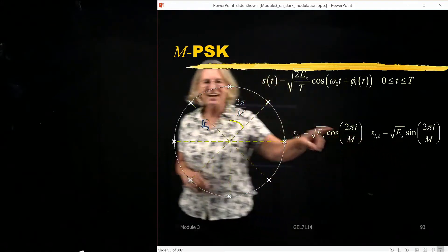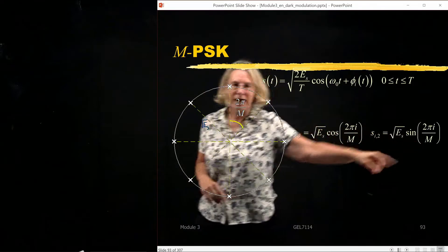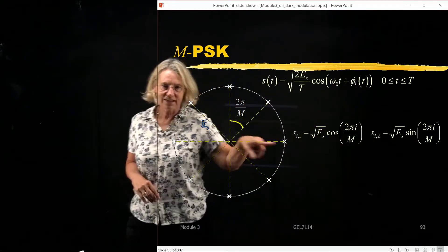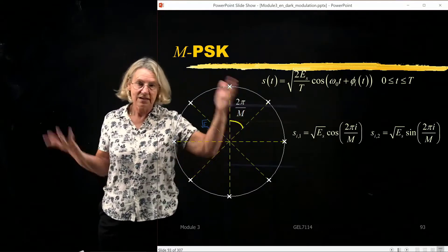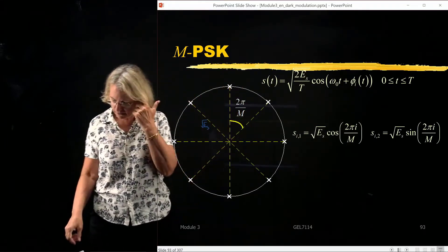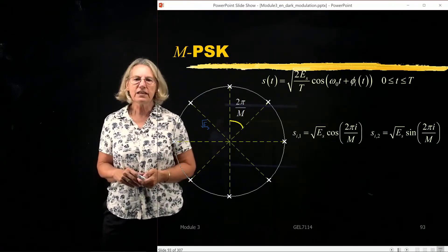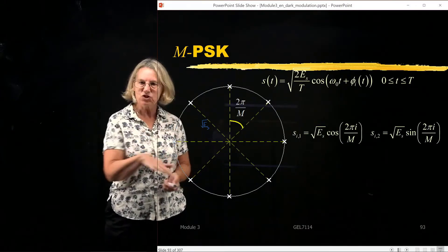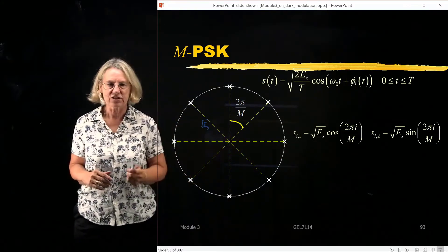So the coordinates, the y coordinate would be the square root of ES sine of 2π over M, whereas the x coordinate would be the cosine. Sine and cosine are the coordinates. So this is just for points around a circle. So now I know the coordinates in signal space of each for M arbitrary. So it's not just for this illustration of 8.